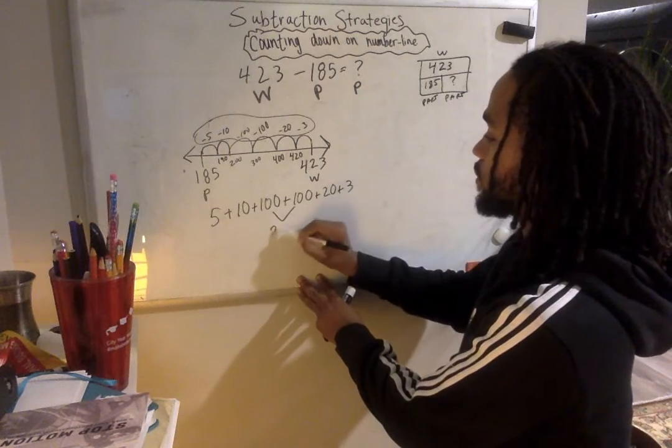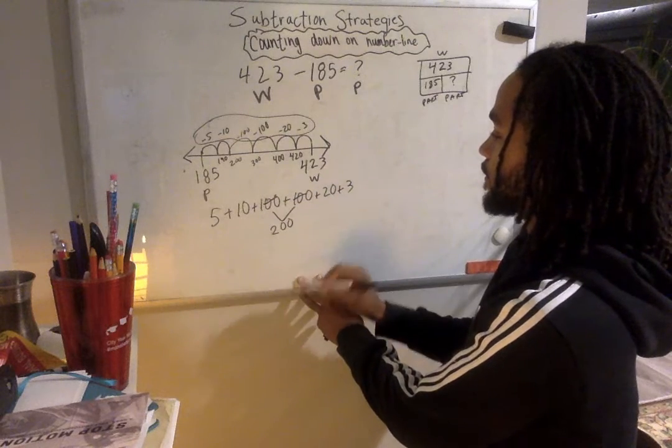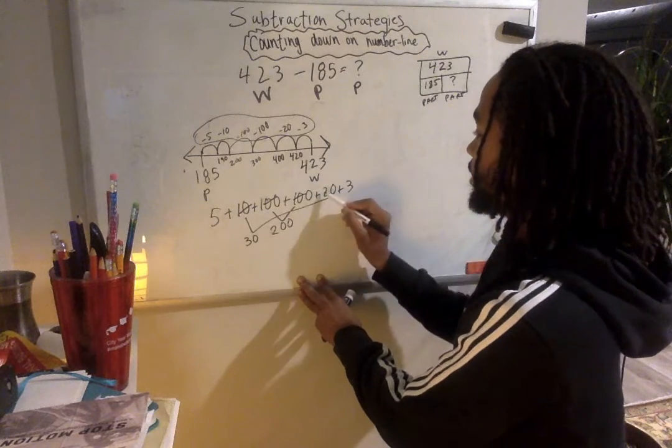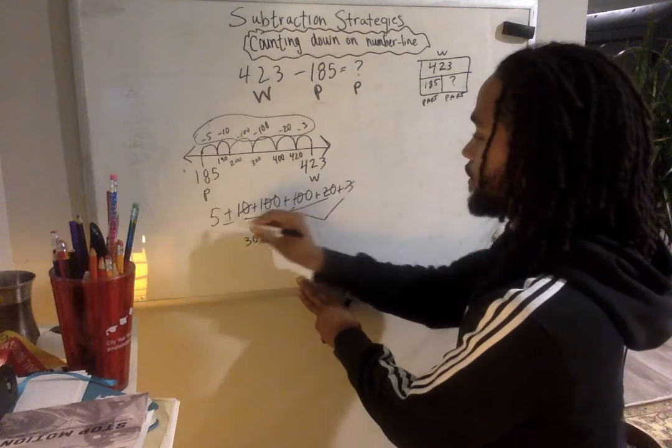100 plus 100, 200. 20 and 10, 30. 5 and 3 equals 8.